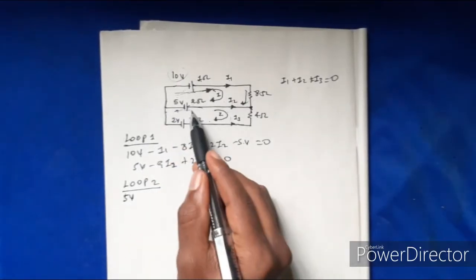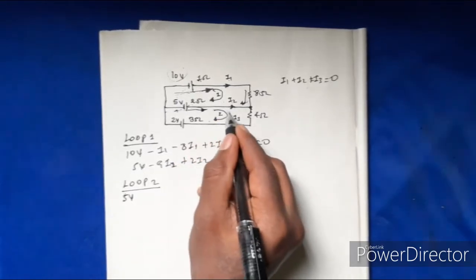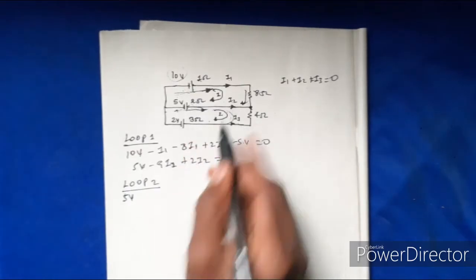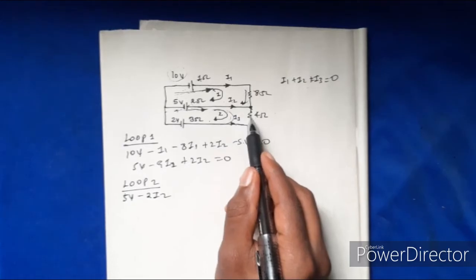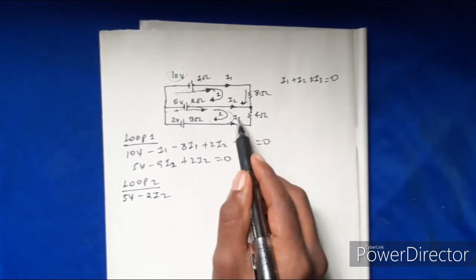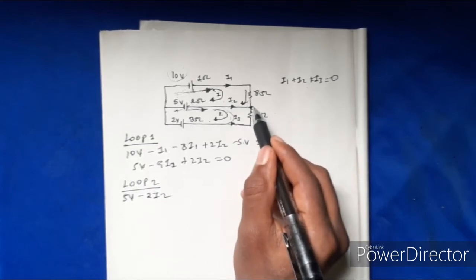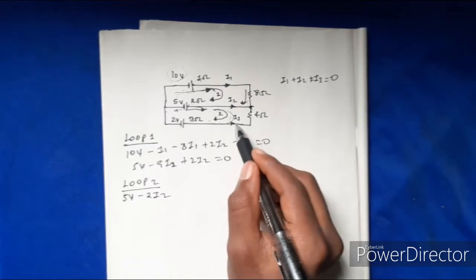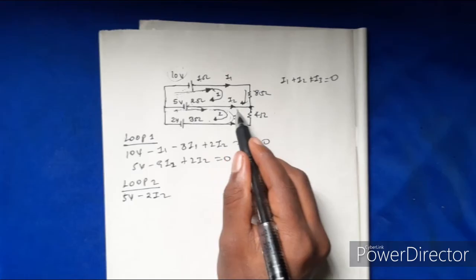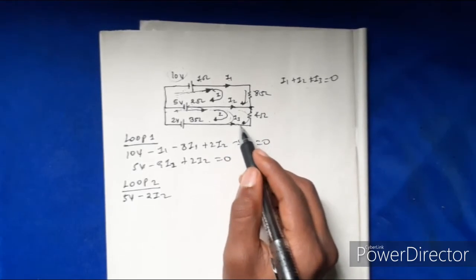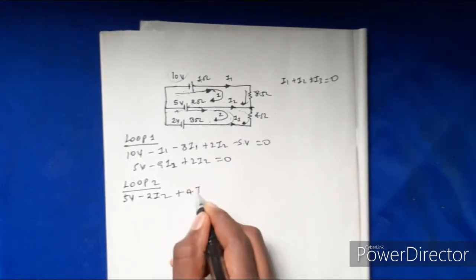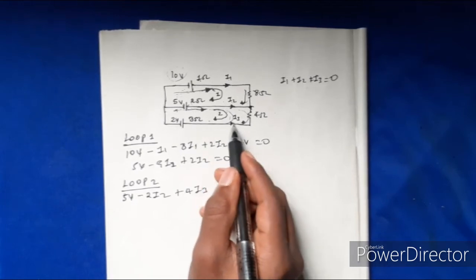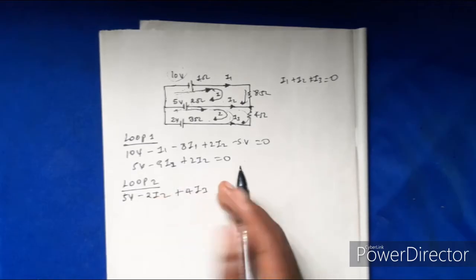Positive 5 volts. The direction of I2 is equal to negative 2I2. The resistor means I3 is equal to I2 at the junction. The direction of I3 shows the opposite direction: 4 times I3, positive 4 times I3, so 4I3 is in a positive direction.